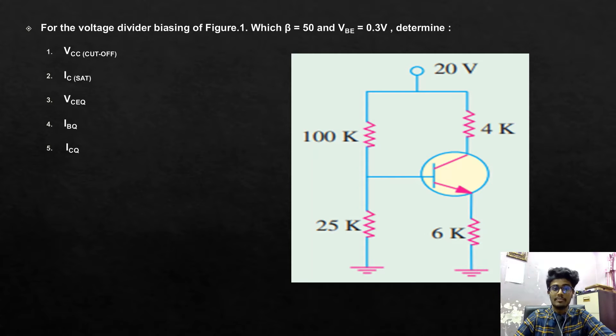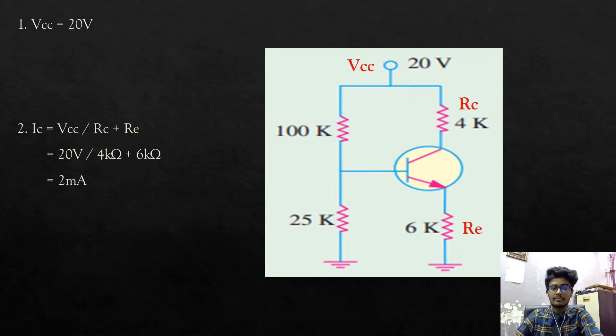So, determine the Vcc or voltage cutoff, Ic saturated, Vceq, Ibq, and Icq. For the next, Vcc is equals to 20V because Vcc is voltage cutoff equals to the voltage load which is 20V.